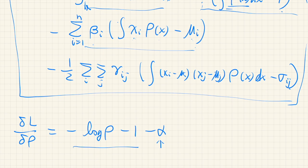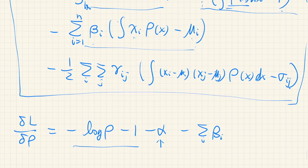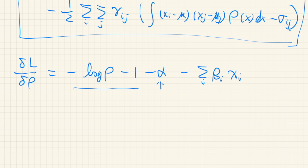And from this, we have sum of i, β_i and x_i. And from the covariance term, we get negative 1 over 2, double sum, γ_ij (x_i - μ_i)(x_j - μ_j).